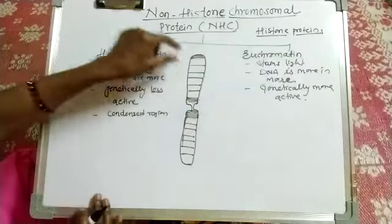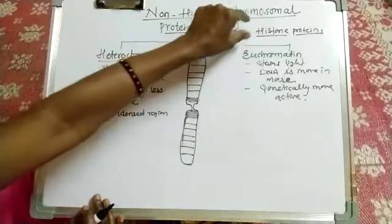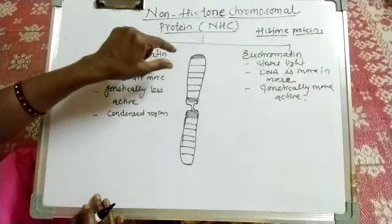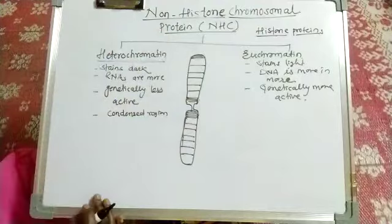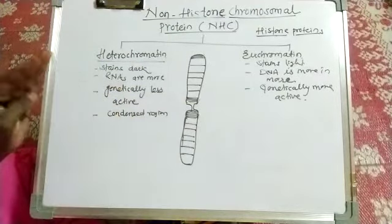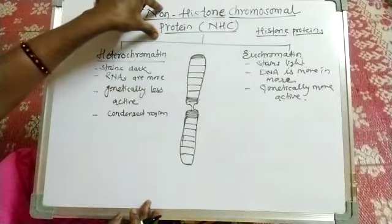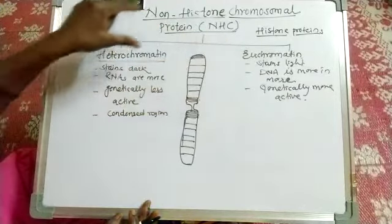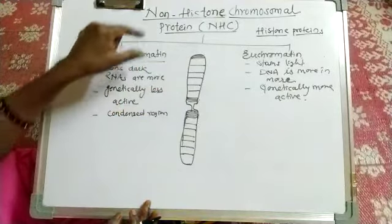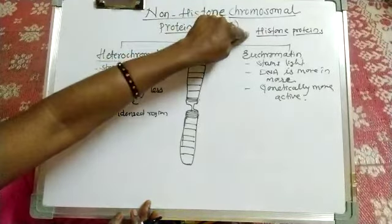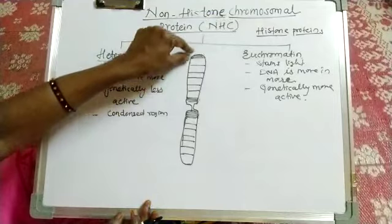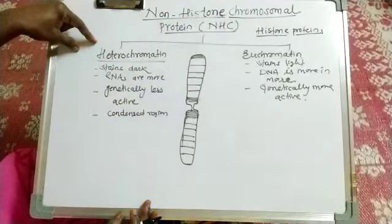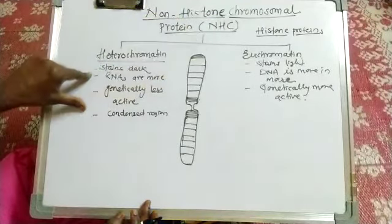This DNA has histone protein which forms the octamer, and the DNA is wrapped around it forming the nucleosome. These non-histone proteins form the heterochromatic and euchromatic regions. The DNA is tightly packed in the heterochromatic region, and this DNA amount is less in terms of RNA production.